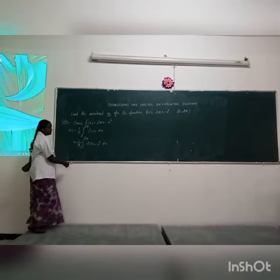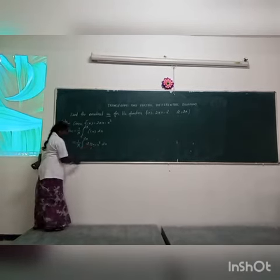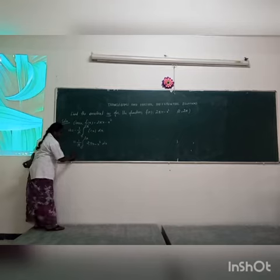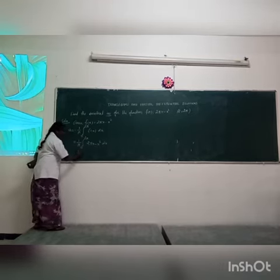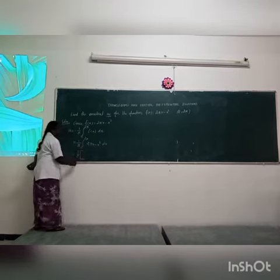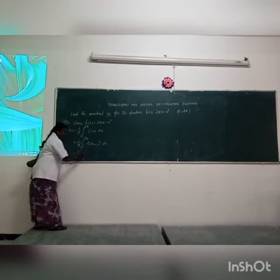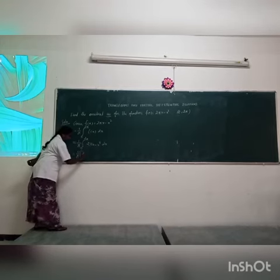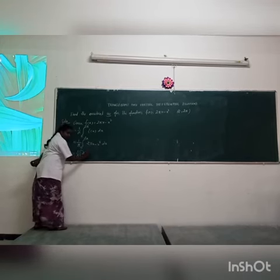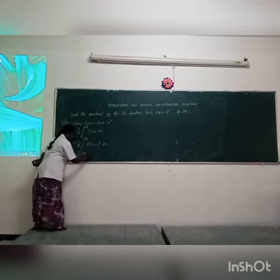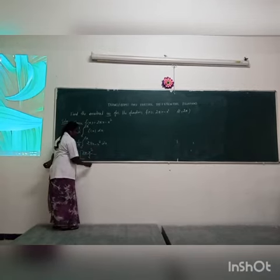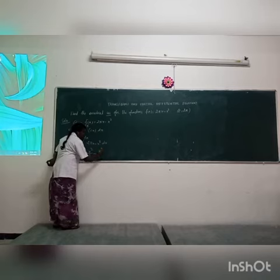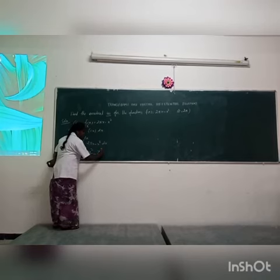Now we integrate 2 pi x minus x square. 1 by pi is a constant. 2 pi x integrates to 2 pi times x square by 2, since 2 pi is a constant. Minus x cubed divided by 3.